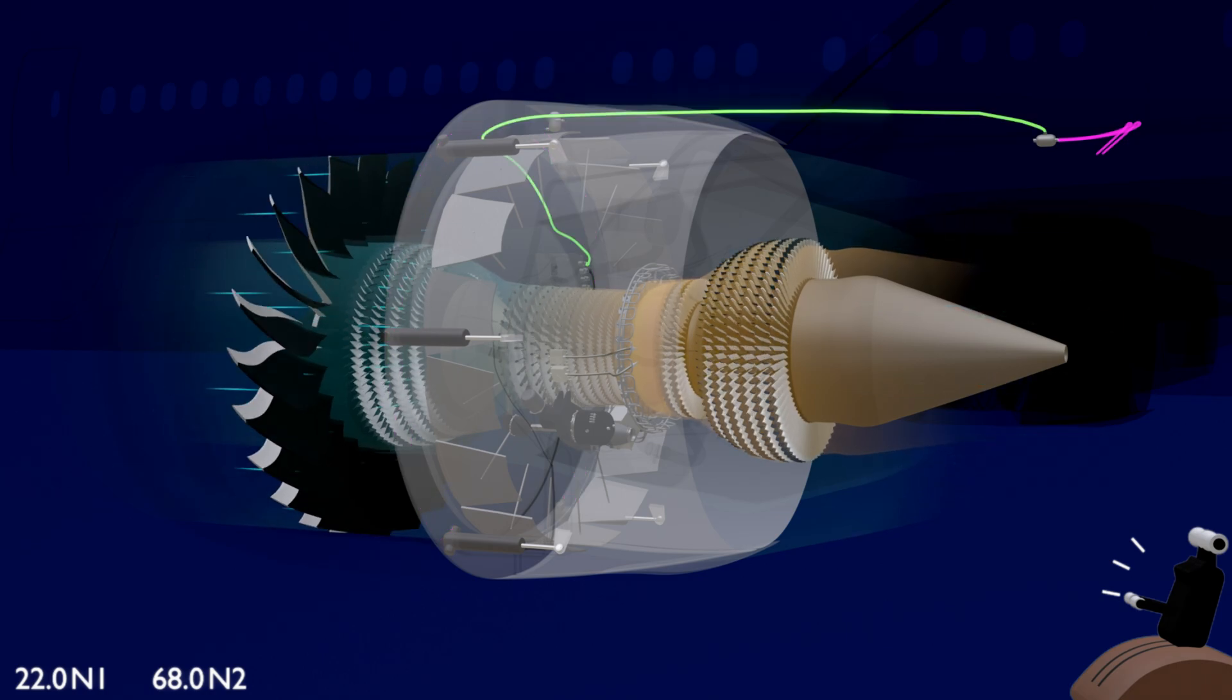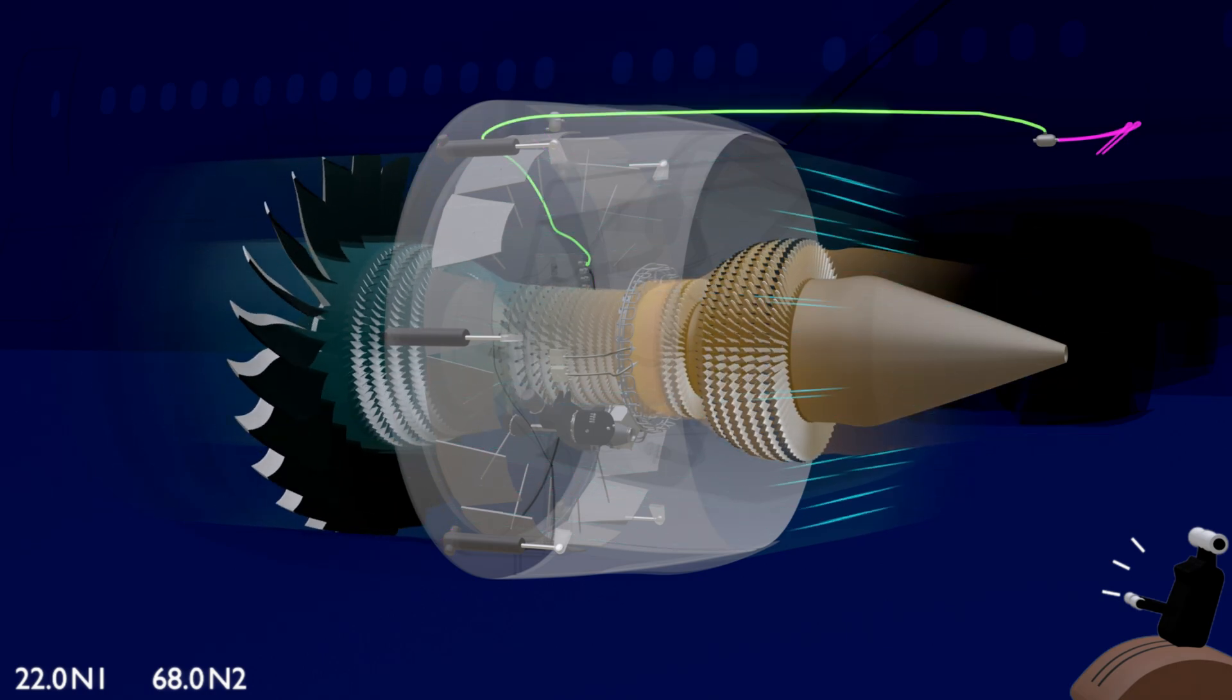Once the reversers are stowed, the EEC closes the isolation valve to deactivate the system.